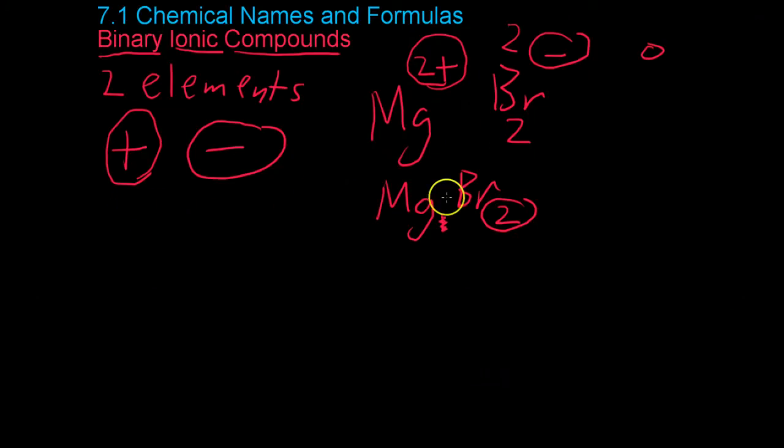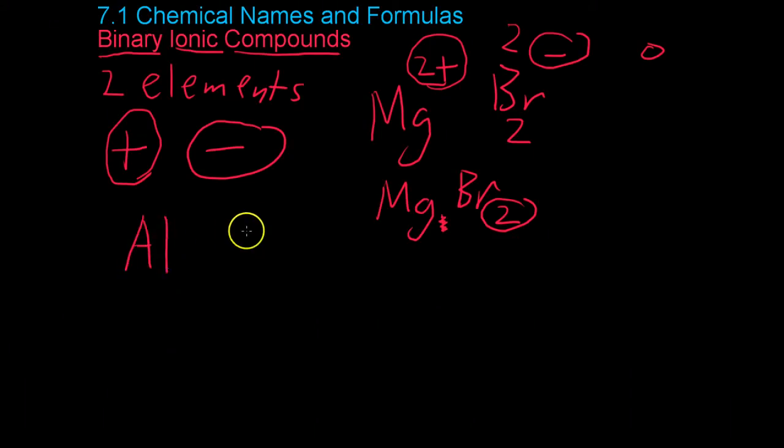Instead of thinking it out like this every time, what you can do is, let's say we're combining aluminum and oxygen. First, what you do is you take the monatomic ion they form and write the charge up here. So in this case, aluminum forms a 3+ ion, and oxygen forms a 2- ion.